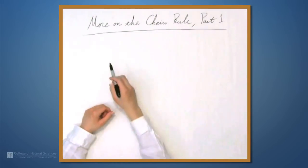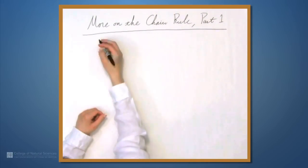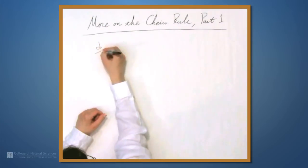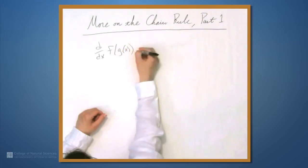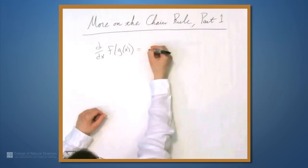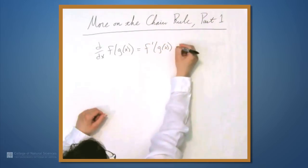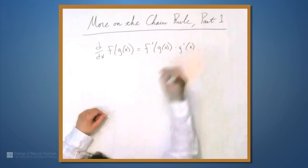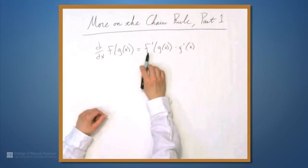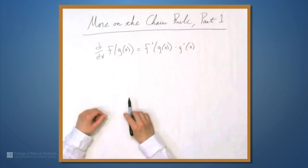So we're here at the example table, and in this video we're going to do some more with the chain rule. Just to remind ourselves, the chain rule says that the derivative of f is f' times g' — it's the derivative of f evaluated at g, times the derivative of g.